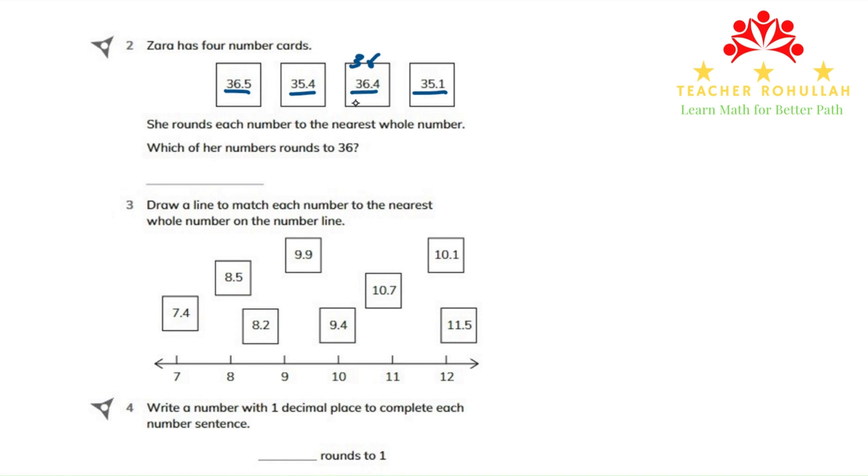So the number that rounds to 36 is 36.4. 36.4 rounds to 36 because 4 in the tenth place is 4 or less. When we compare 5 or 4, we say that this is 4 or less, so it rounds to 36.